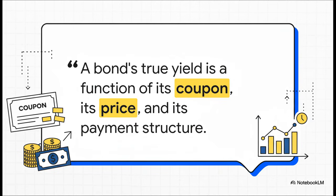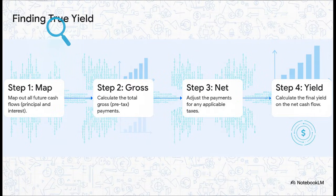A bond's true yield isn't just one number. It's a dynamic result of three really key factors: the coupon it pays, the price you pay for it, and the specific way it pays you back over time. You change any one of those things, and you change your entire return.